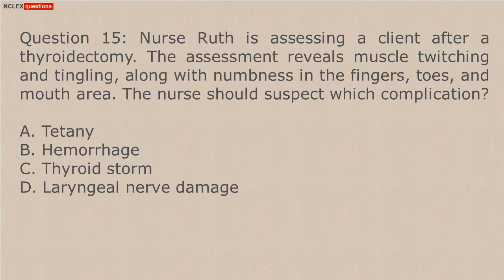Answer: C. Deposits of adipose tissue in the trunk and dorsal cervical area. Because of changes in fat distribution, adipose tissue accumulates in the trunk, face (moon face), and dorsal cervical area (buffalo hump). Hypertension is caused by fluid retention. Skin becomes thin and bruises easily because of a loss of collagen. Muscle wasting causes muscle atrophy and thin extremities.